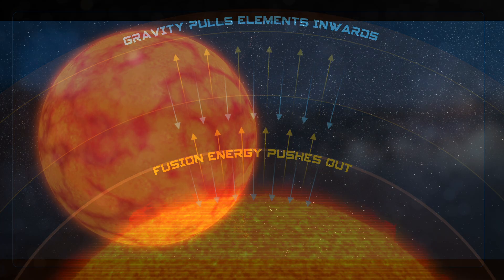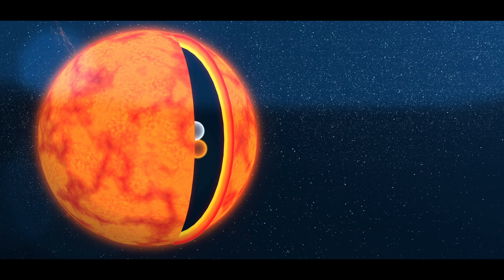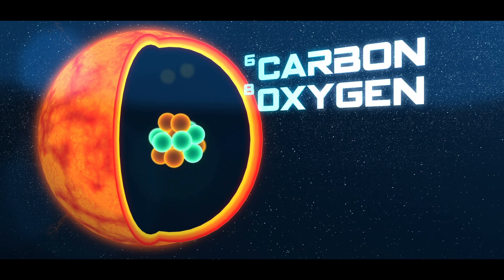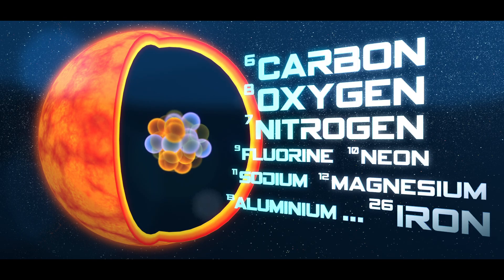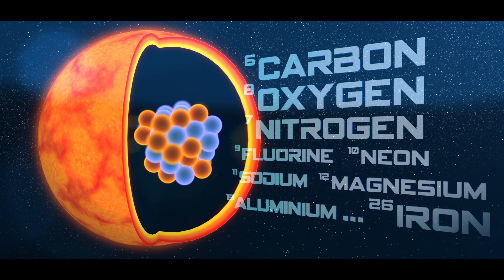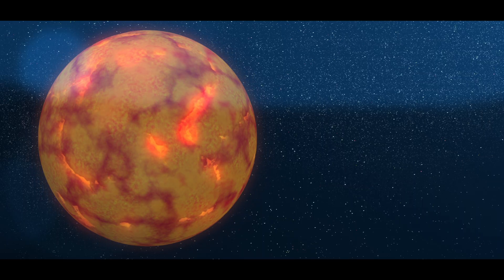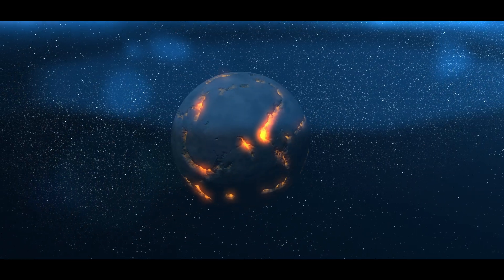Over its lifetime, the fusion reactions in the core of a massive star will produce not only helium, but also carbon, oxygen, nitrogen, and all the other elements in the periodic table up to iron. But eventually the core's fuel runs out, leaving it to collapse completely. That causes an unbelievably powerful explosion we call a supernova.